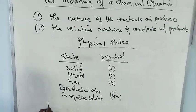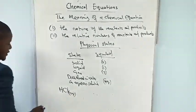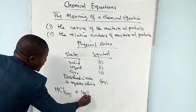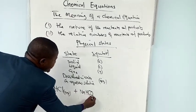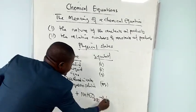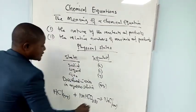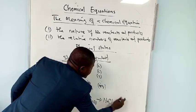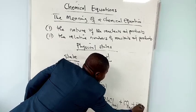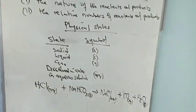For example, hydrochloric acid in aqueous solution — dissolved in water — may react with sodium hydrogen carbonate, which is in solid form, to give us sodium chloride in aqueous solution, plus carbon dioxide gas, plus liquid water. These are the state symbols in action.